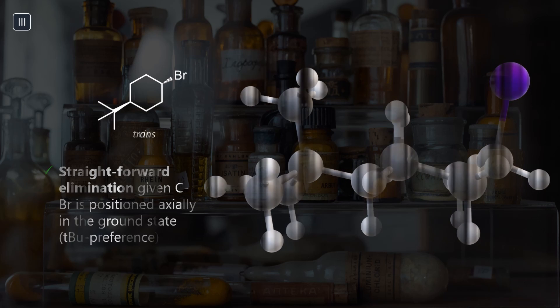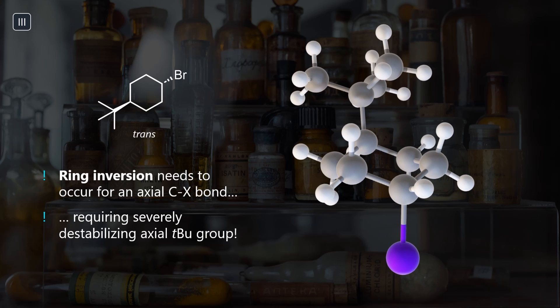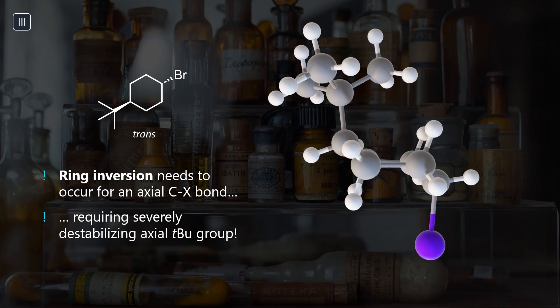The trans isomer is not ready. We need a chair flip from a double equatorial to a double axial conformation. This comes with a hefty energy price, so this elimination happens hundreds of times slower.